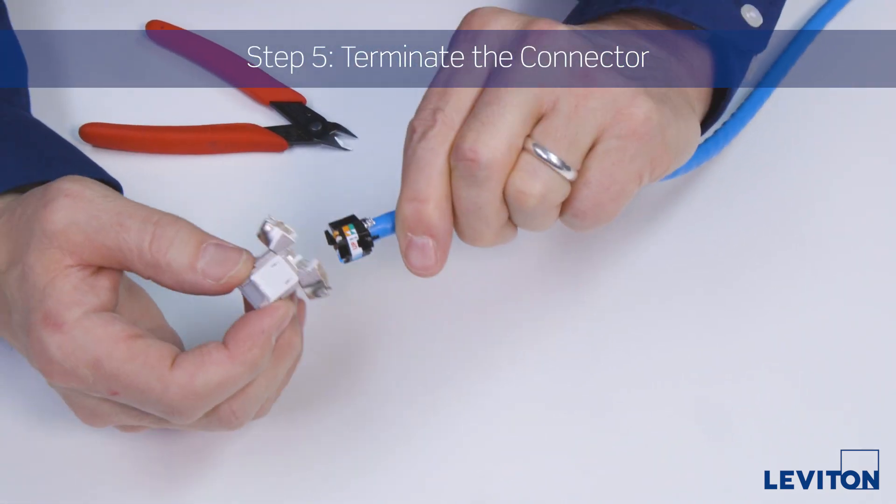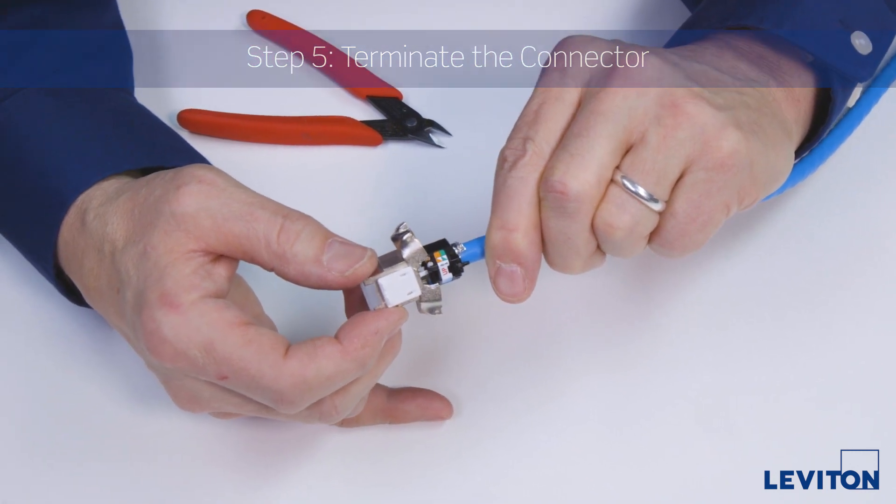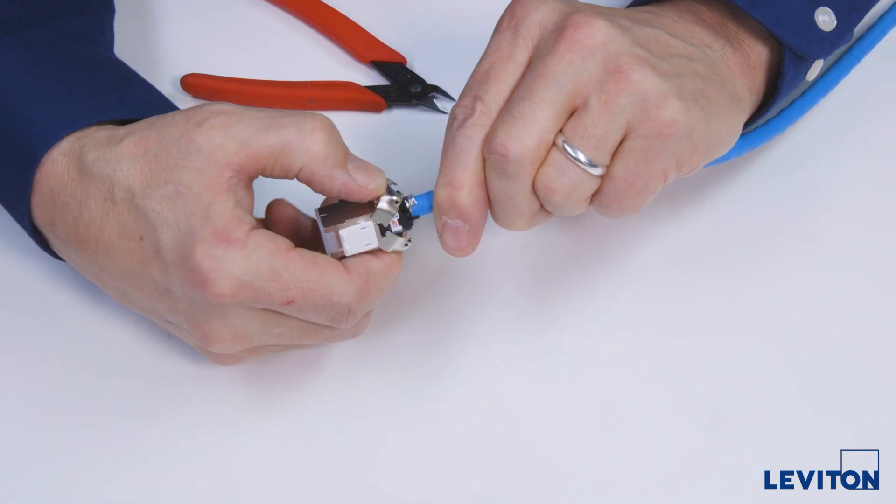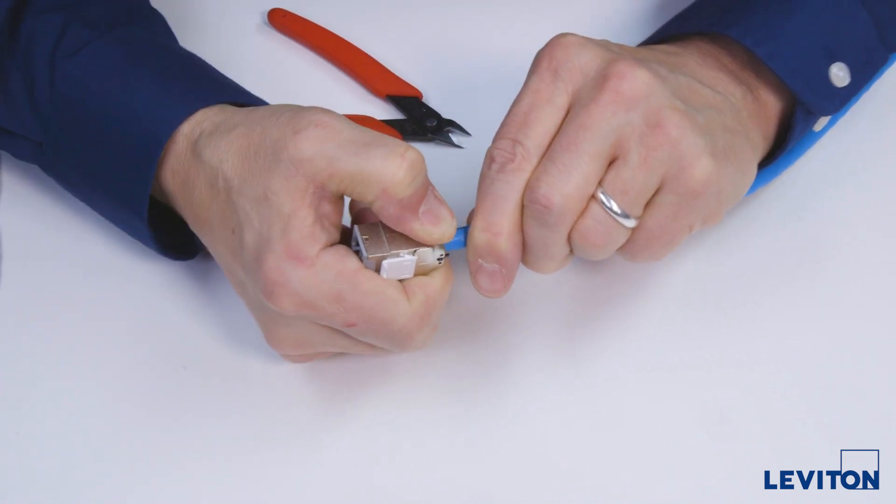Line the up indication on the wire manager with the up indication molded on the connector and insert. Then to complete termination, just close the rear doors.